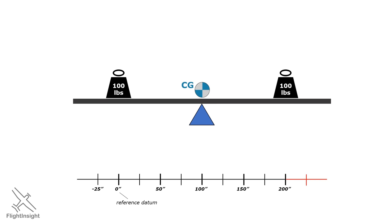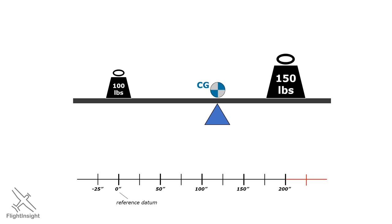If we swap one of these weights for a heavier one at the same position, in order to balance this plank now, that fulcrum, our center of gravity, will need to move closer to the heavier weight. If we want to bring the CG back to the 100 inch point, we could just swap the other weight for a 150 pound one.